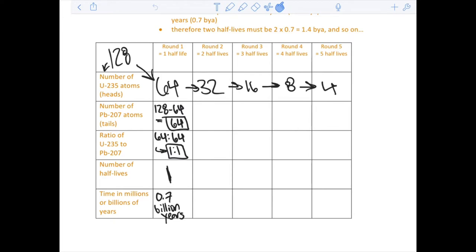We now have 64 uranium atoms remaining, we decay down to 32. If I started with 128, I'll minus 32, that means we have 96 lead atoms. We have 96 lead, 32 uranium. The ratio for this one would be 32 to 96, and that's a 1 to 3 ratio. The numbers are not going to go up steadily. We went from a 1 to 1 ratio to a 1 to 3 ratio. This is our second half-life, and if the first one was 0.7 billion, we'll times that by 2, and that'll be 1.4 billion years old.